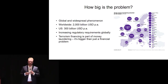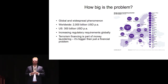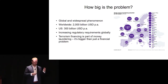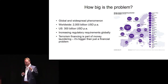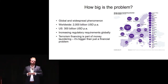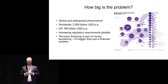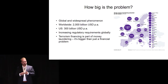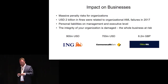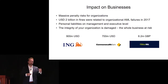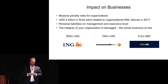There's no serious democracy in the world which is not trying to tighten the regulations around AML. It's not only an economical problem — if you look at terrorism financing as part of money laundering, it's a society problem, a political problem, a security issue, and a reputational problem. Globally, 2 billion in fines were related to organizational AML failures last year.